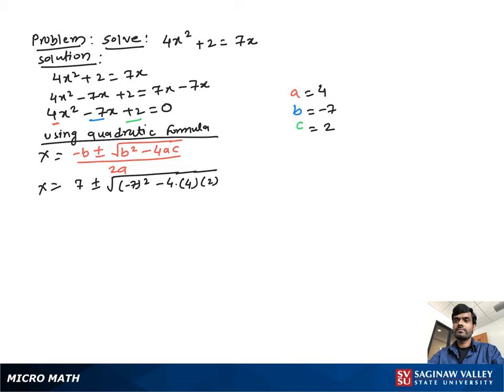Then we get x equal to 7 plus minus square root: negative 7 square is positive 49, minus 4 times 4 times 2 equal to 32, over 2 times 4 is 8.